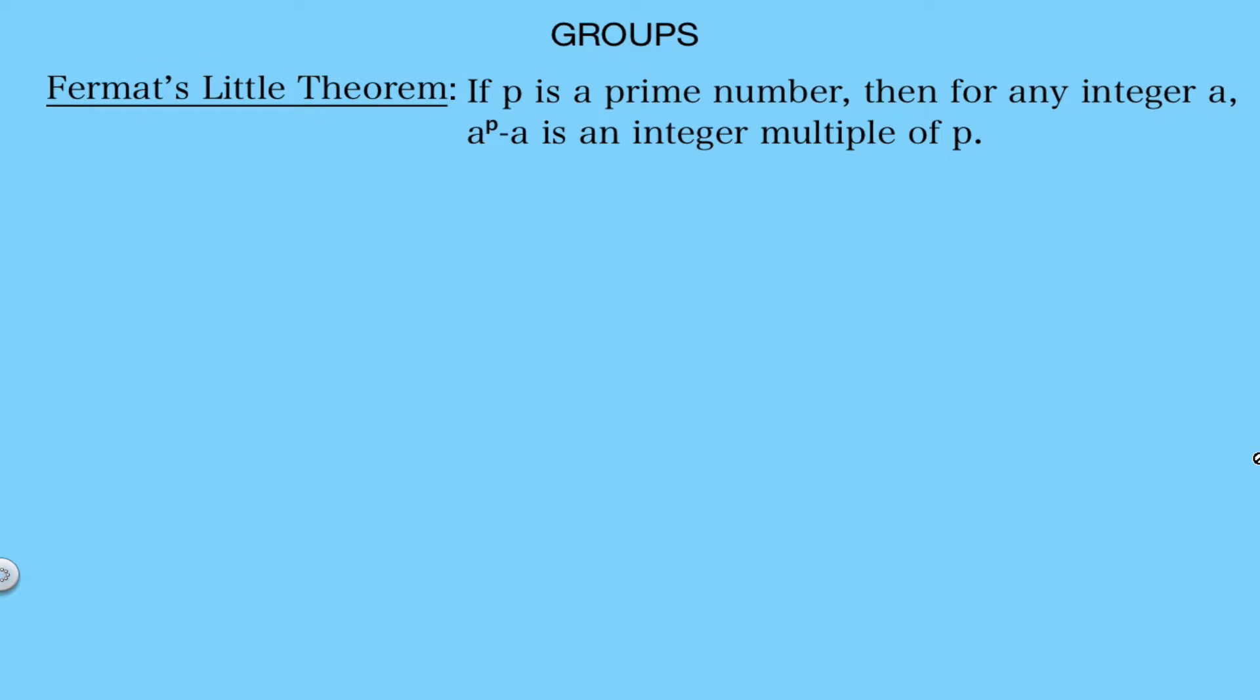For example, you may have heard of Fermat's Little Theorem that states that if p is a prime number, then for any integer a, a to the p minus a is an integer multiple of p. This theorem went unsolved for nearly 100 years until Euler proved its truth in 1736.